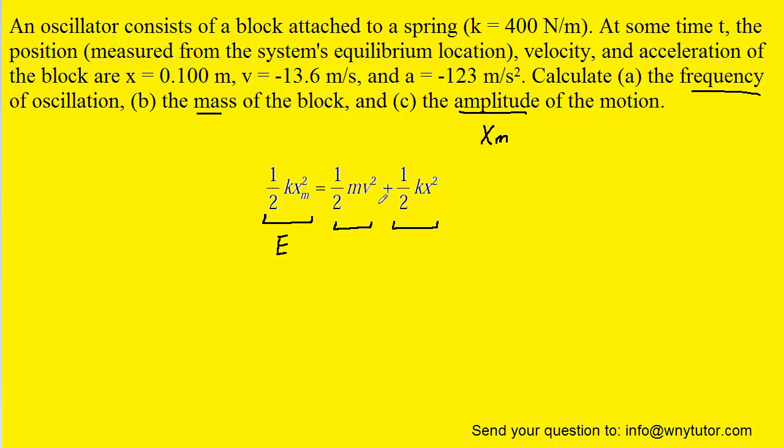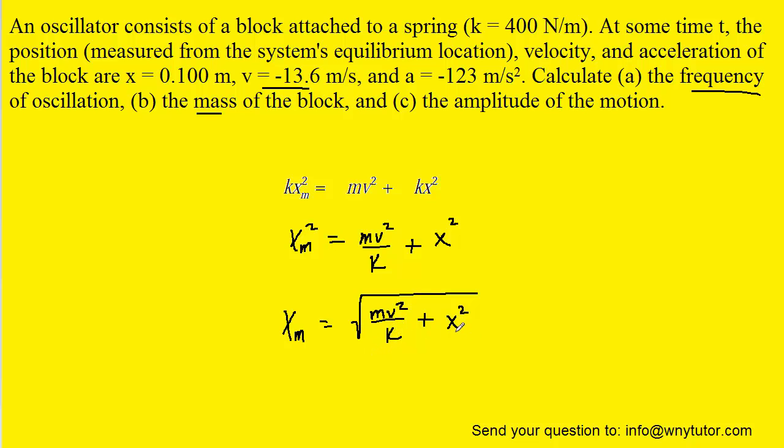We can divide each term by one half, divide each term by k, and then finally take the square root of both sides of the equation. We can easily calculate x sub m now because we know the mass, we know the speed at this particular instant that was given to us in the problem, k was already noted, and then x once again is the position of 0.1 meters at this particular moment. So we'll plug in all the known values.